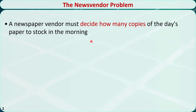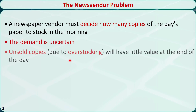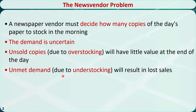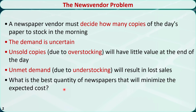The news vendor problem can be described like this. A newspaper vendor must decide how many copies of the paper to stock in the morning. The demand is uncertain. Unsold copies due to overstocking will have little value at the end of the day. Unmet demand due to understocking will result in lost sales. What is the best quantity of newspapers that will minimize the expected cost? In other words, the news vendor must order the number of papers that properly balances the overstocking and understocking costs. This type of models are called news vendor models.